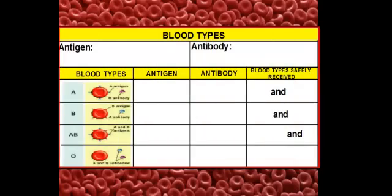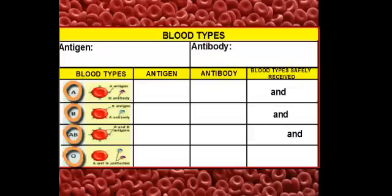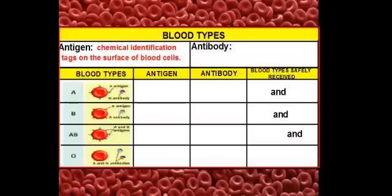That concludes the functions and parts of the blood. Now, the functions and parts are pretty straightforward, but when we talk about blood types, it gets a little tricky. In the ABO blood system, we have four different types: A, B, AB, and O blood. The blood types are named after proteins found on the cell surface — these chemical markers are called antigens, which are chemical identification tags on the surface of blood cells.